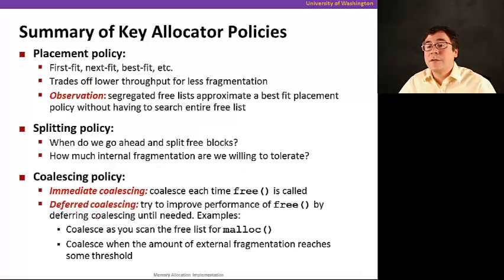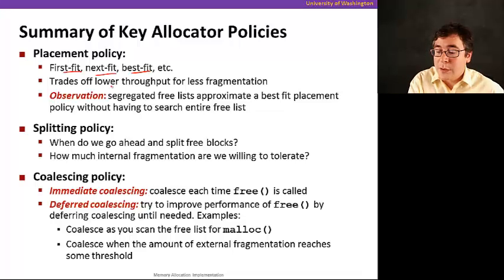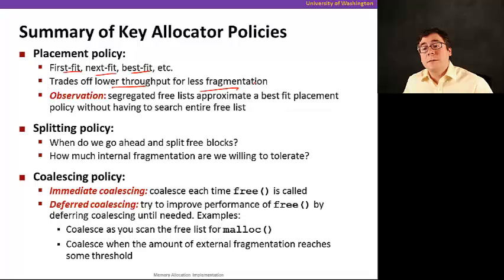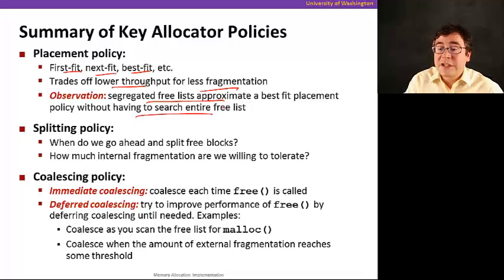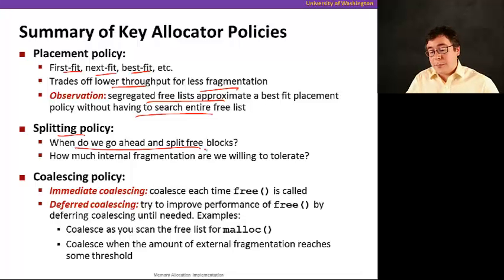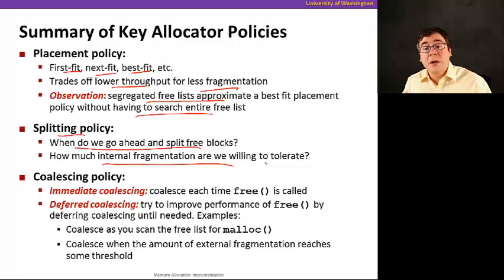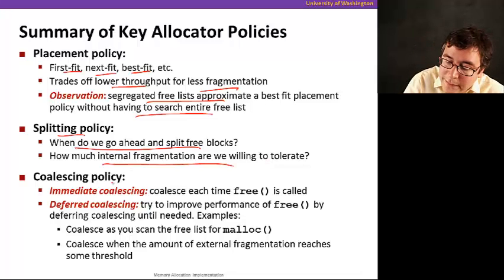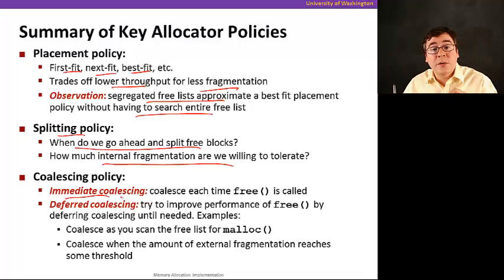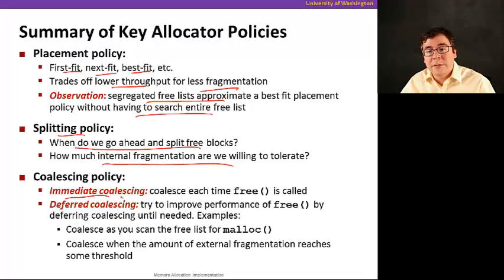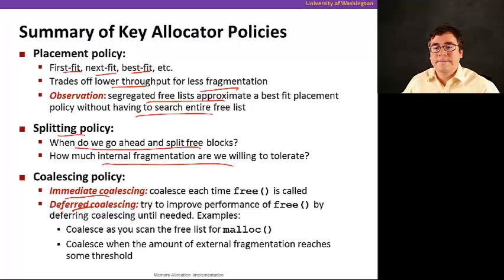To summarize the key allocator policies: the placement policy — first fit, next fit, and best fit — trades off throughput for fragmentation. Segregated free lists approximate best-fit placement without searching the entire free list. The splitting policy determines when we split free blocks, depending on how much internal fragmentation we're willing to tolerate. The coalescing policy can be immediate — coalesce right when you free — or deferred to avoid throughput cost, though delaying may increase fragmentation.